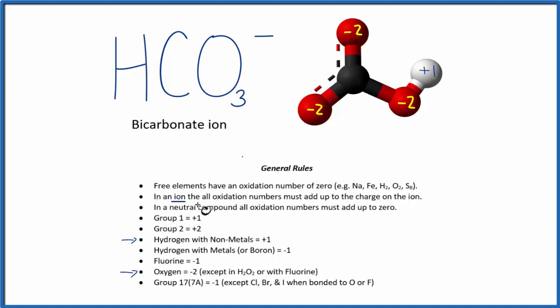So in an ion, all the oxidation numbers have to add up to the charge of the ion. So all of these numbers, including the carbon, have to add up to a negative 1. So we'd have 2, 4, 6, that's minus 6, plus 1.